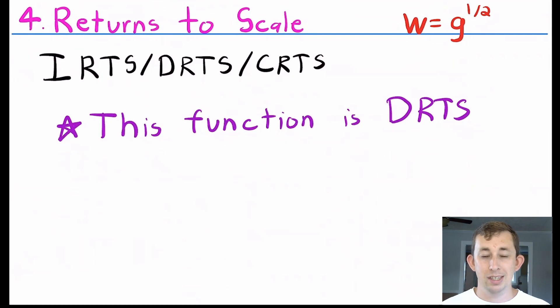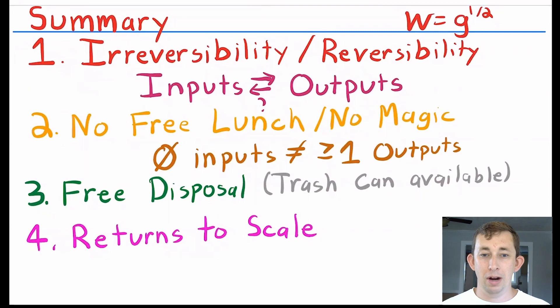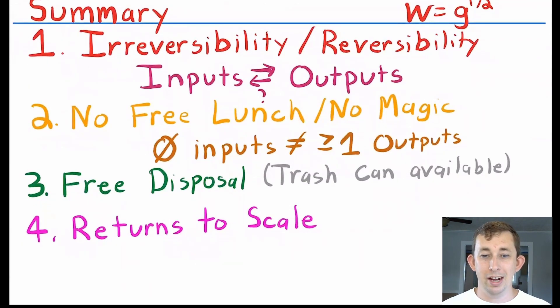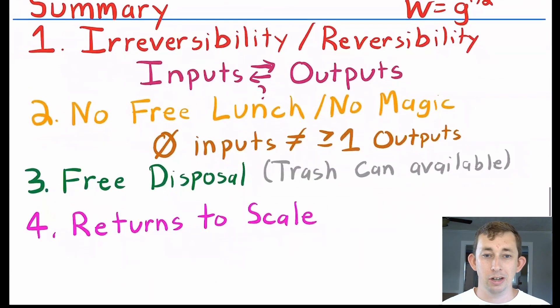But in summary, we've got these four properties: irreversibility, we're asking about inputs being interchanged with outputs; no free lunch, no magic, can't make anything out of thin air; free disposal, we can put things right into that trash can; and returns to scale.